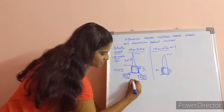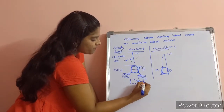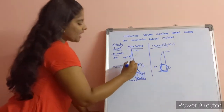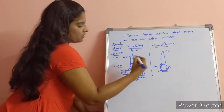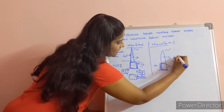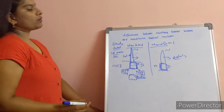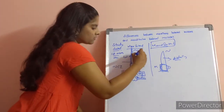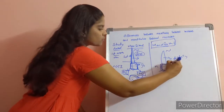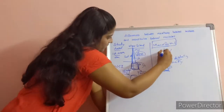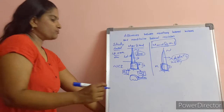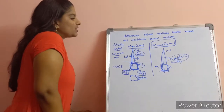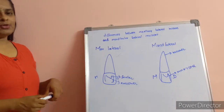Regarding mamelons: smaller mamelons are present in the maxillary lateral incisor, similar to the maxillary central incisor. In the mandibular lateral incisor, mamelons are not present. As for the root, it is long and symmetrical. From the labial side, the root of the mandibular lateral incisor is somewhat distally bent, giving it a distally bent appearance.